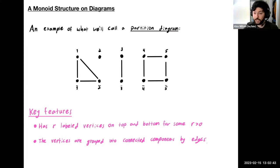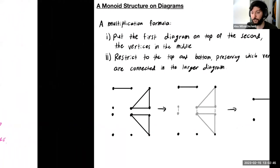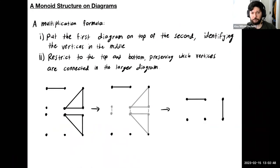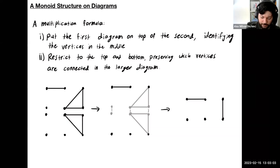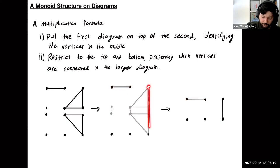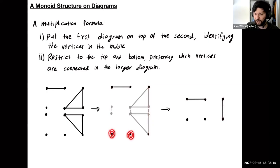What I find interesting about these diagrams is actually a product structure on them. There's a formula for multiplication: if we want to multiply two diagrams, we put one on top of the other, identify vertices in the middle, and then restrict to just the very top and the very bottom, preserving which vertices are connected. Because these two are connected, these two at the top will be connected in the resulting diagram.